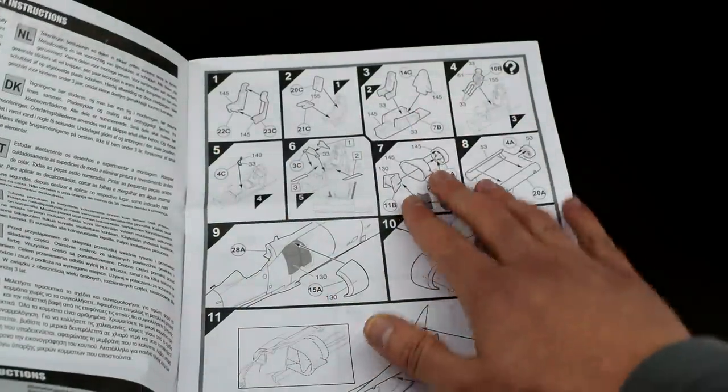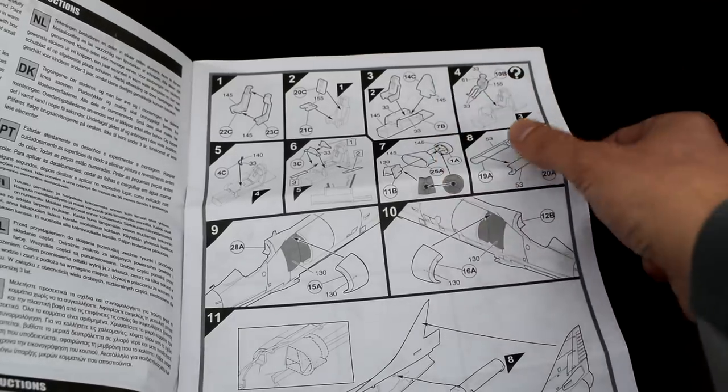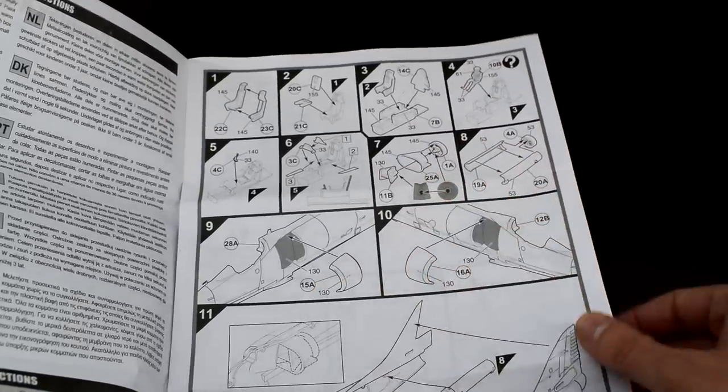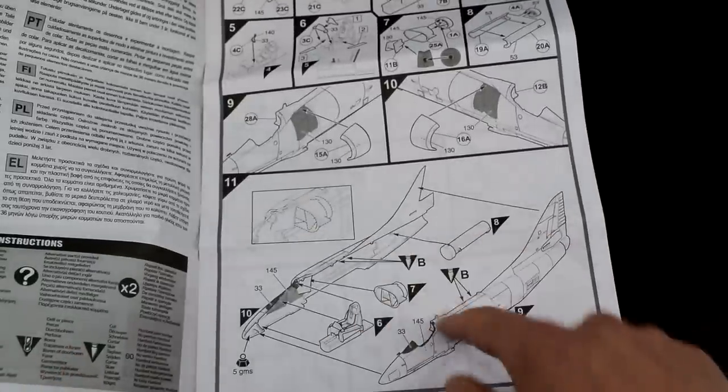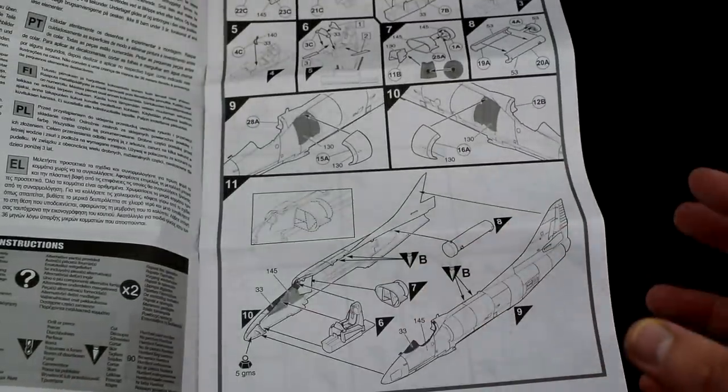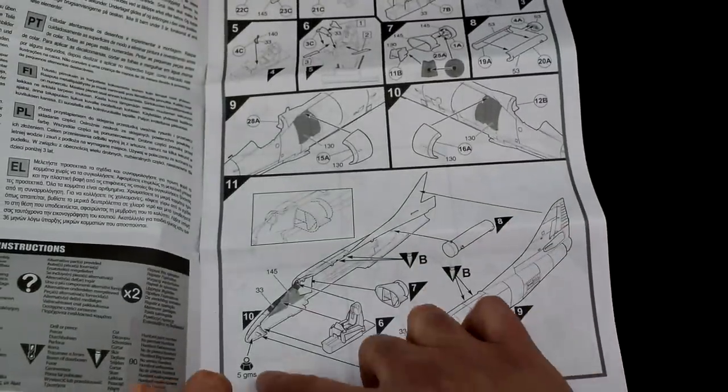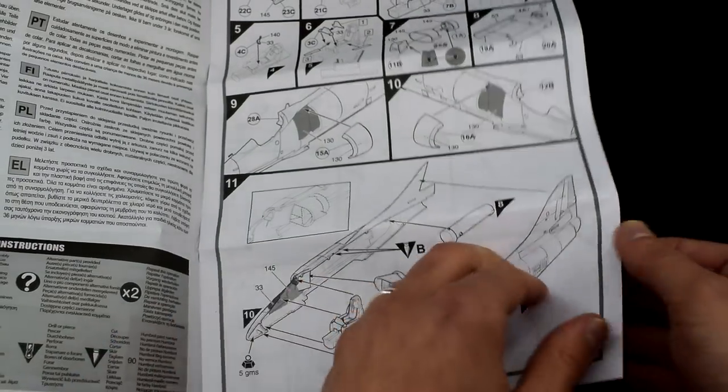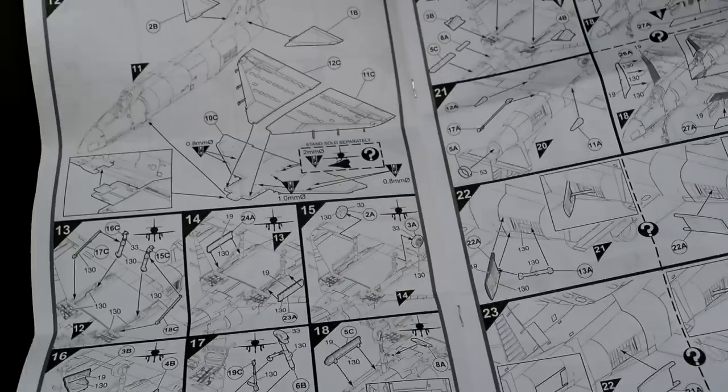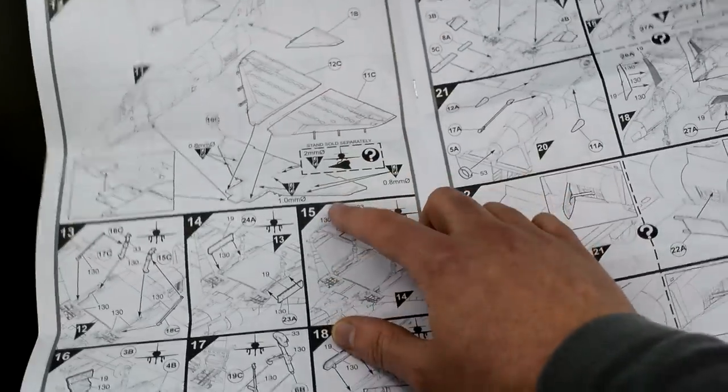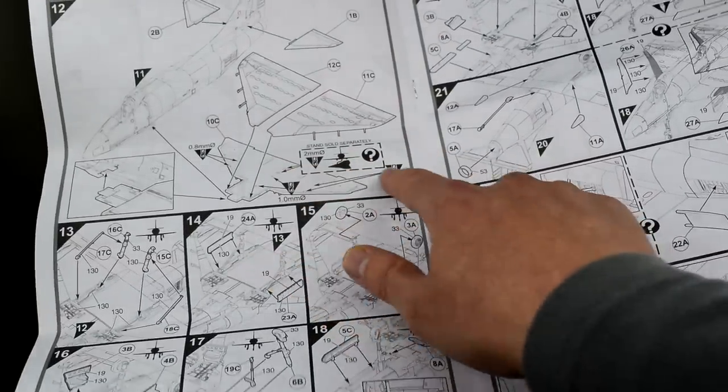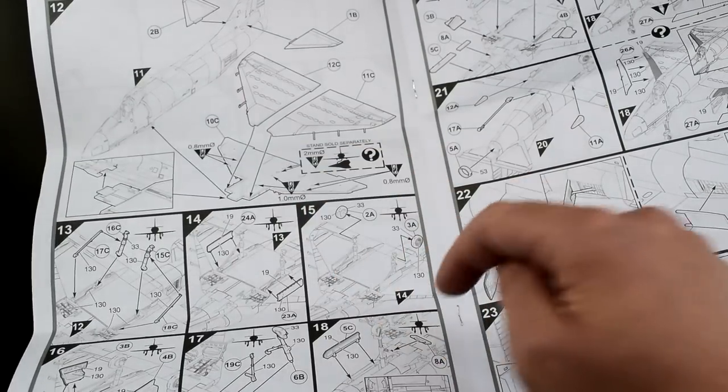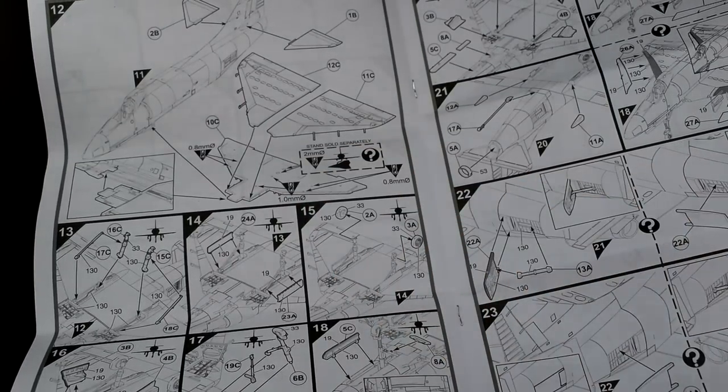We start off by assembling various parts of the cockpit and we can add our pilot. Then we start working on elements of the engine. By stage 11 we should be ready to be putting the fuselage halves together. It says here that you need to put 5 grams of weight in the nose which will be very beneficial if you want to have the landing gear lowered. Flipping over the page we add the wings and it says here that we need to open up these holes. I presume these holes are for ordnance but this bigger hole in the middle is if you want to use one of their display stands which don't come in the set.